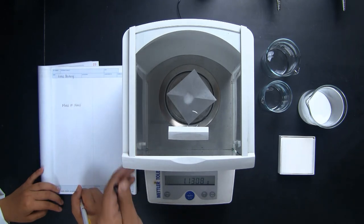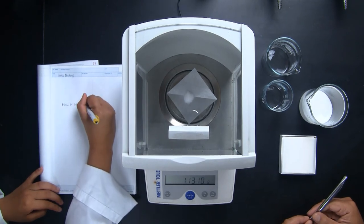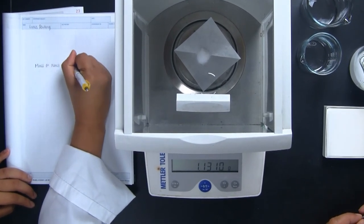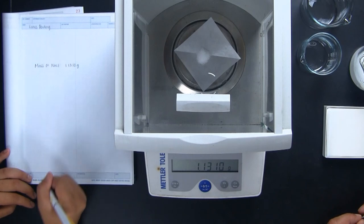Using the tear function, the subtraction is done for you, and the reading on the balance is the mass of the reagent that was transferred to the paper. You're ready to go.